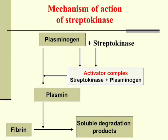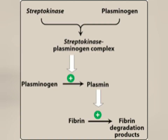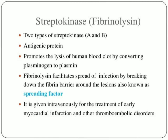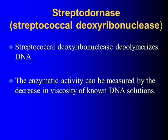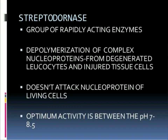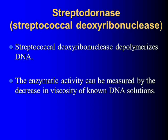The next toxin is streptokinase, or fibrinolysin, which causes breakdown of the fibrin barrier around lesions and facilitates the spread of infection. Next is deoxyribonuclease, or streptodornase, which causes depolymerization of DNA, helps to liquefy thick pus, and is responsible for the thin serous character of streptococcal exudates. Pyogenic exudates contain large amounts of DNA.